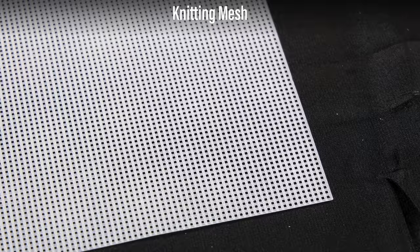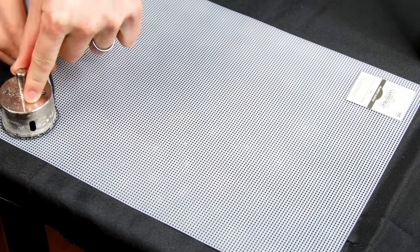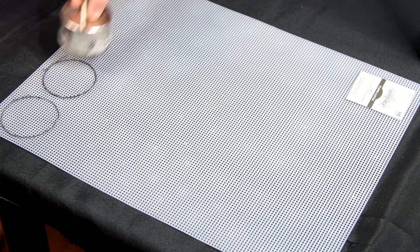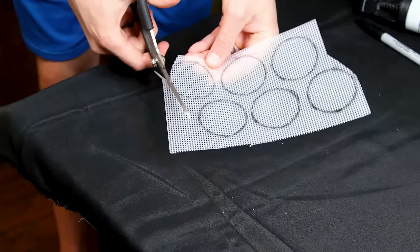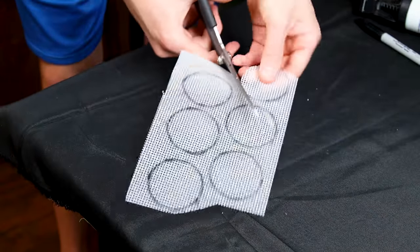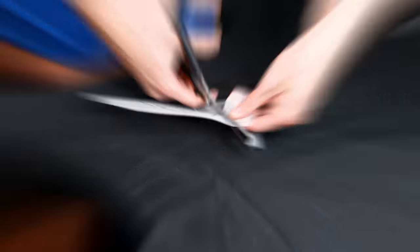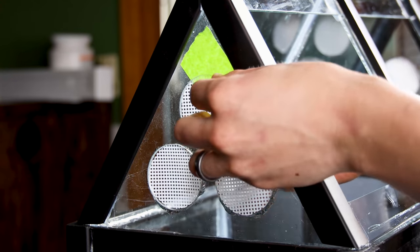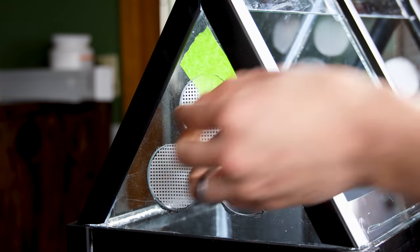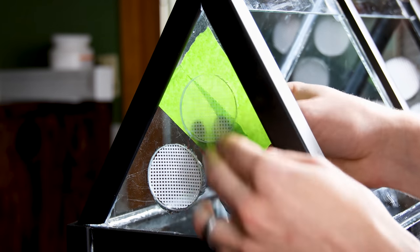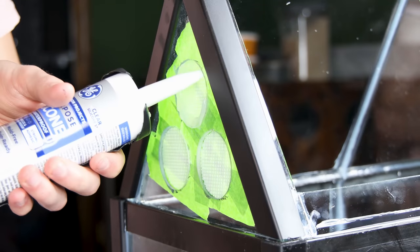The next thing I'll do is cover the ventilation holes with knitting mesh. I used a hole saw from earlier as a guide. I cut these out and put them in place. I taped up the other side. I applied silicone around the edges and smoothed it out.